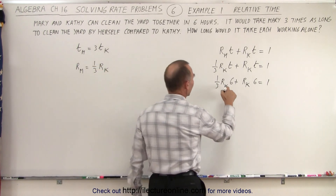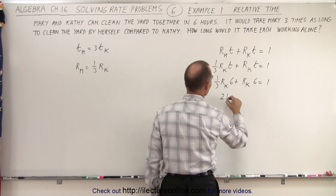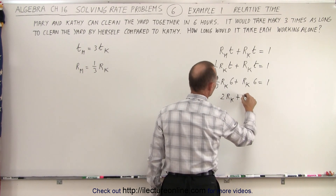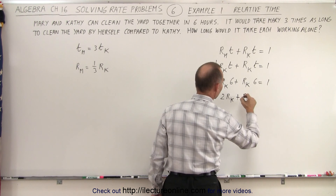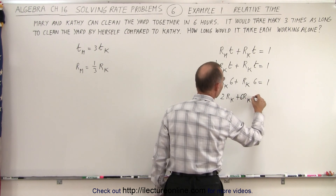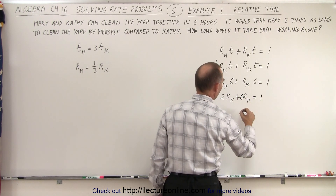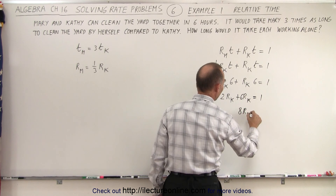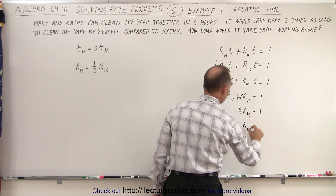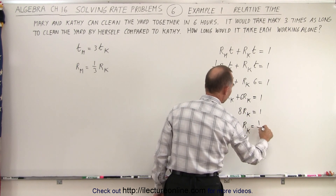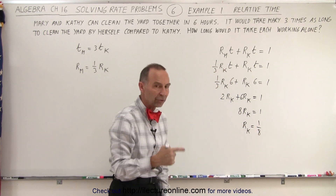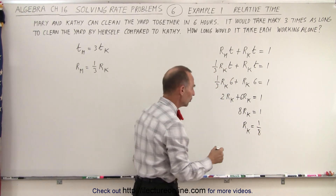All we have to do now is solve for the rate of Kathy. One-third times six is two, so we have two times the rate of Kathy plus six times the rate of Kathy equals one, or eight times the rate of Kathy equals one, so the rate of Kathy is equal to one-eighth of the job done per hour.